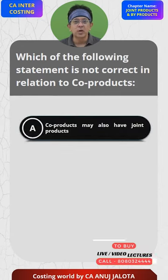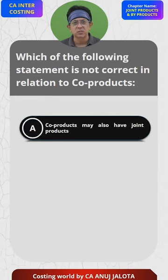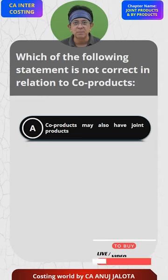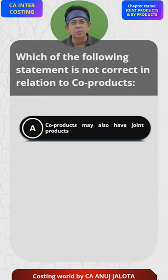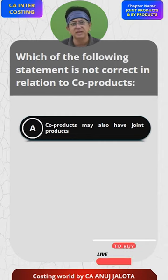Option A: A co-product may also have joint products. This statement is true — a co-product might have joint products. For example, if you produce mustard oil and sunflower oil, mustard oil might have another joint product. We don't know that for certain, but it might.